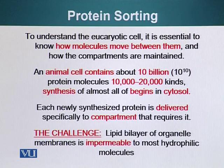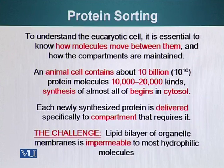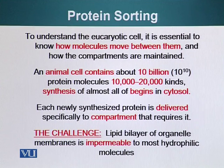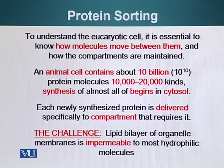Now we want to understand how molecules move between compartments and how these compartments are maintained. An animal cell contains about 10 billion protein molecules — about 10,000 to 20,000 different types — present inside a eukaryotic cell. Each newly synthesized protein is delivered specifically to the compartment that requires it. However, there is a challenge: the lipid bilayer is hydrophobic and polar molecules cannot cross it on their own. So systems have evolved that allow these protein molecules to enter a specific organelle, and we will talk about some of those mechanisms.